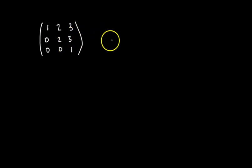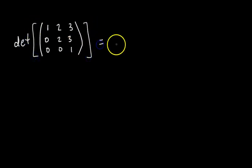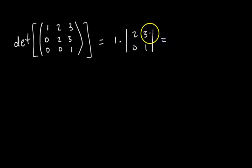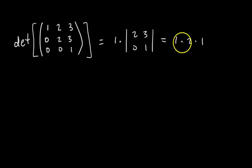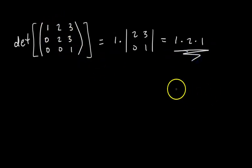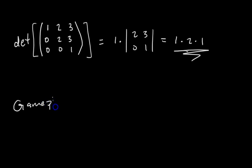What's the determinant of that upper triangular matrix? Using cofactor expansion along the first column, we get 1 times the determinant of [2 3 / 0 1], which is 2×1 minus 0, giving 1×2×1. The key property to point out: for an upper triangular matrix, you can find the determinant just by multiplying the entries along the main diagonal. This is super important for the row reduction method.